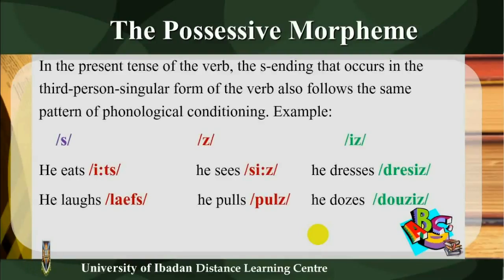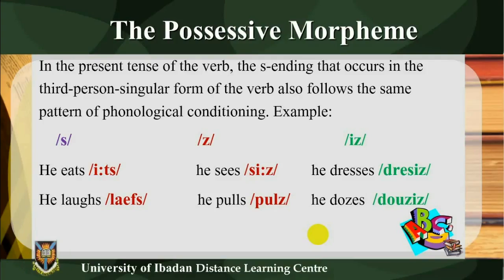Examples: S — he sits (T, S), he laughs (F, S); Z — he sees (Z), he pulls (L, Z); IZ — he dresses, he doses. These illustrate how the third person singular S morpheme follows the same phonological conditioning rules as the plural and possessive morphemes.